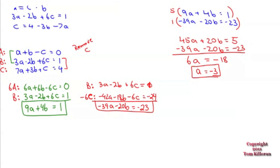By the way — these answers are not going to be fractions. If you end up with a fraction, you did something wrong. These problems are hard enough without fractional answers, so they'll all be integers. If you get something like negative 3 fifths, go looking for a mistake. All the book's answers are whole numbers — except number 23, which we'll skip.